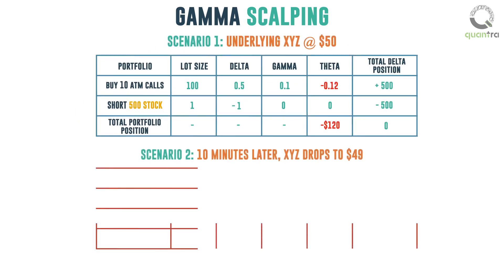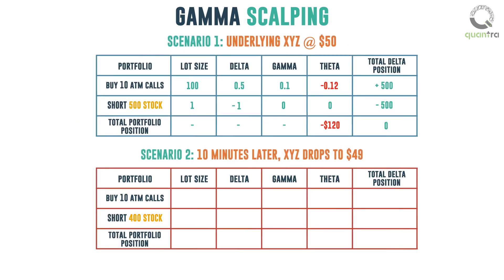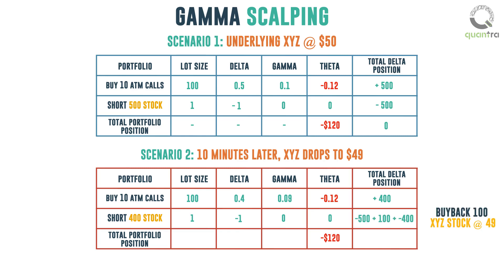Scenario 2: 10 minutes later, XYZ drops to $49. The new Delta is now 0.4, the new Gamma is 0.09, and the Theta is minus 0.12. To maintain your Delta hedge, you now need to be short on 400 XYZ stocks. Hence, you buy back 100 XYZ at $49, thus pocketing a profit of $100. This is your first scalp.